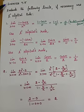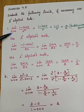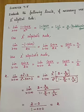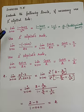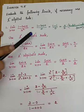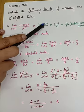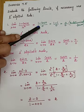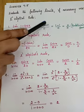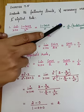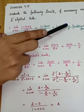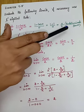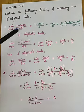First problem (Exercise 7.5, Problem 1): limit x→0 of (1 − cos x)/x². First, apply the limit: (1 − cos 0)/0² = (1 − 1)/0 = 0/0. We are getting the indeterminate form 0/0, so we can use L'Hôpital's rule.